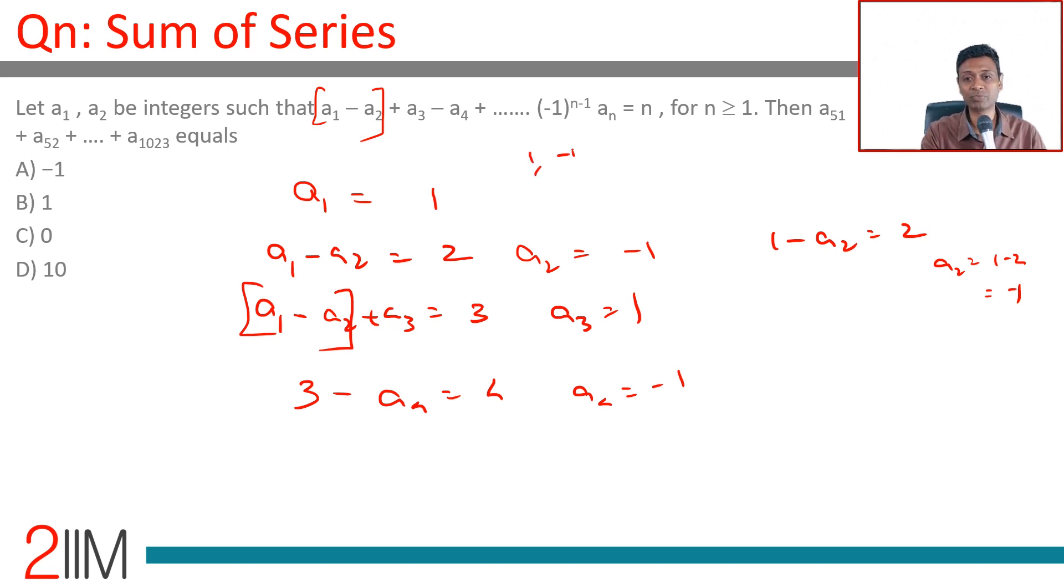This is just 1, -1, 1, -1, 1, -1... Odd numbered terms are +1, even numbered terms are -1.